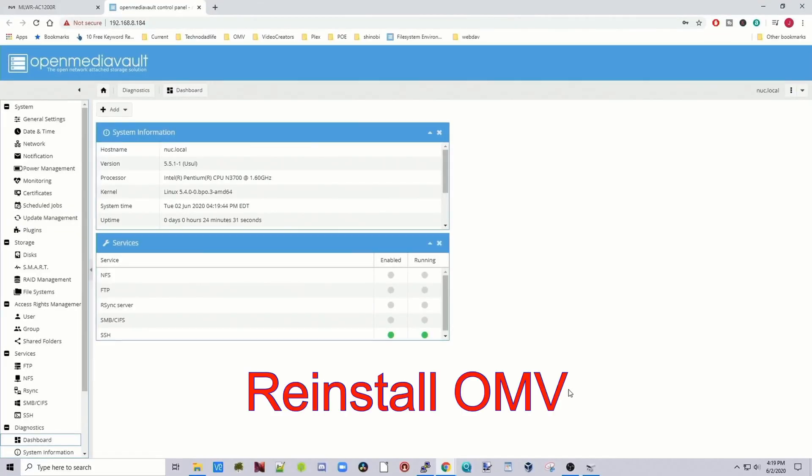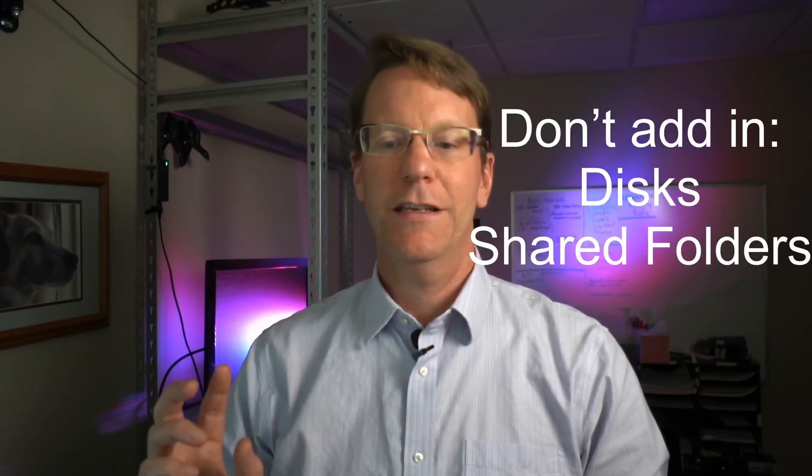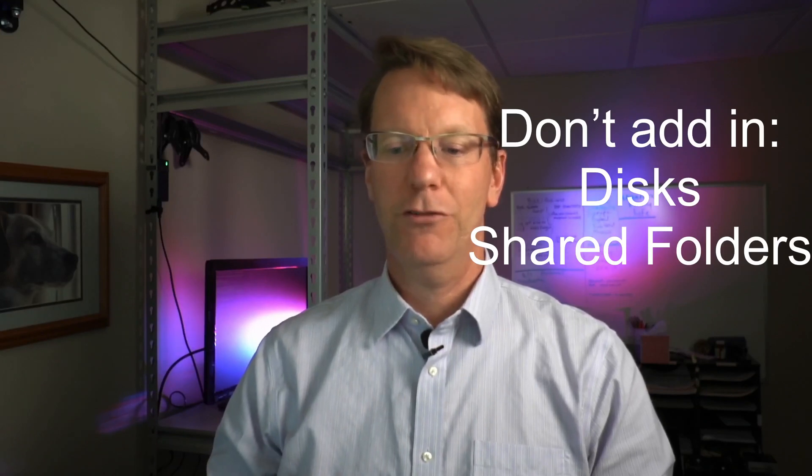So the first thing you need to do is go to OpenMediaVault and simply reinstall the OS on the disk that you had installed on originally. Now as you're doing this, make sure you do everything but adding in the disks and the shared folders.